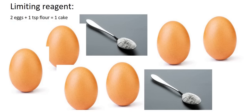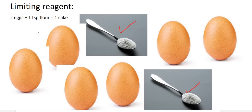Then in somebody else's cupboard or fridge we look through what they have, and they have two teaspoons of flour and six eggs. We're not going to just throw all of that together — that cake is going to taste very eggy. So what we need to look at is, if we have six eggs, then we could technically try and make three cakes. But for every two eggs, you need one teaspoon of flour, so if you have six eggs, then you would need three teaspoons of flour.